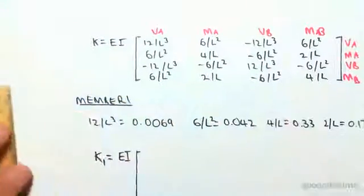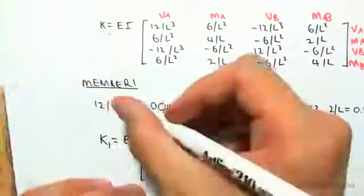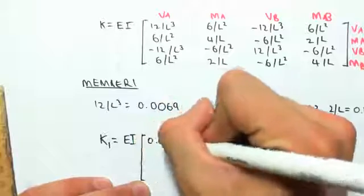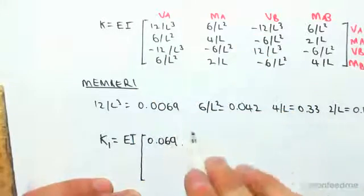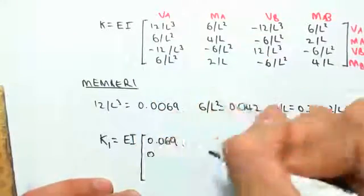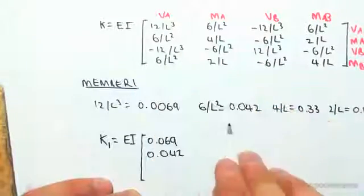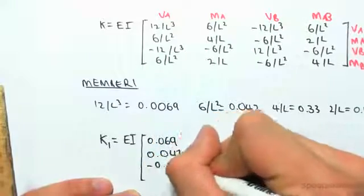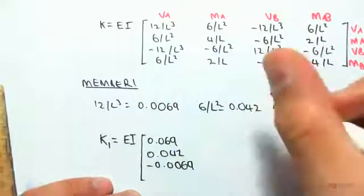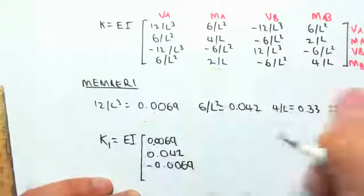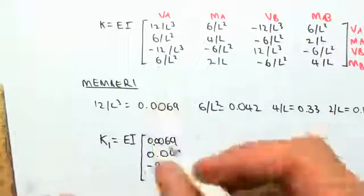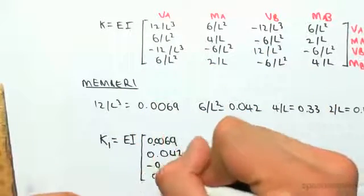Okay, so 12 on L cubed is 0.0069, 6 on L squared is 0.042, minus 12 on L cubed is minus 0.0069. Sorry, that actually needs to be 0.00... 6 on L squared is 0.042.